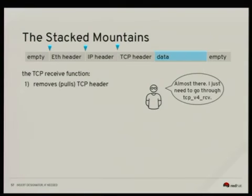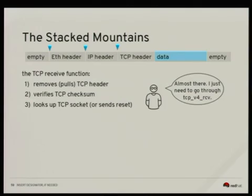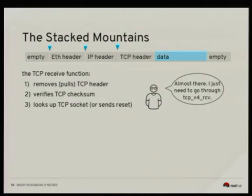TCP processing starts: we remove the TCP header by moving the pointer and verify the TCP checksum. Then we try to find out which application this packet belongs to. In Linux, if you want to communicate over a network, you open a socket and specify options like destination address. The open sockets from various applications are stored in the kernel, and based on the packet fields we find the right socket. If no matching socket is found, we send a response to the sender indicating no one is listening.